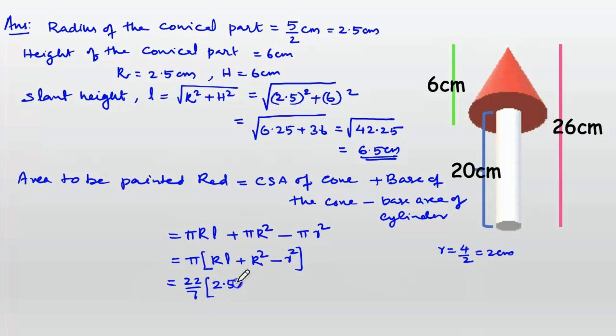Substituting: 22/7 into 2.5 into 6.5 is 16.25, plus 2.5² is 6.25 minus 4.